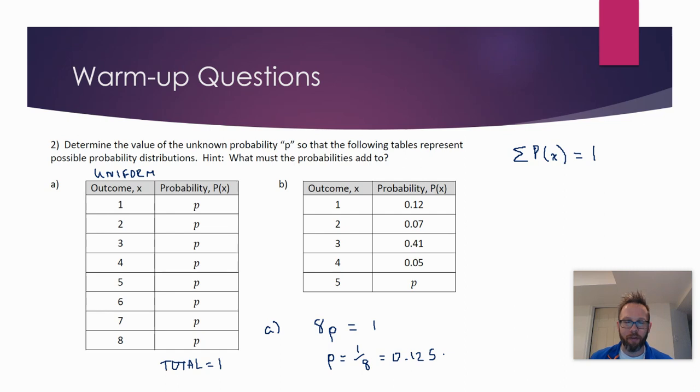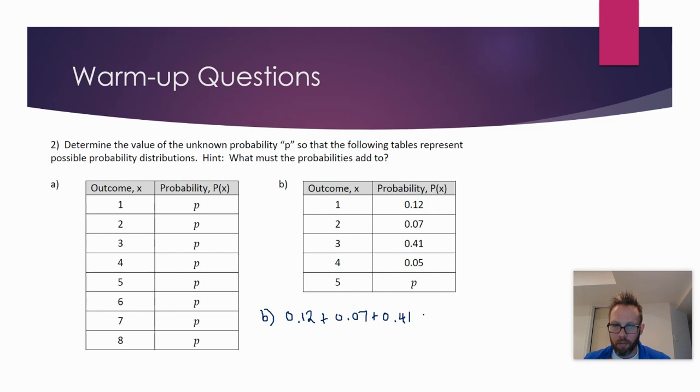We can use a similar method for P. The equation we set up will just look a little bit different. So whatever P is, when we add it to all of the other probabilities, 0.41 plus 0.05 plus whatever P is, has to equal one. And again, this is just another equation to solve. So you can do it in one step or a couple steps. I'm going to do it in a couple steps here. All of the known probabilities add up to 0.65. And so that means for it to be a legitimate probability distribution, to add to one, that final probability should be one minus 0.65 or 0.35.